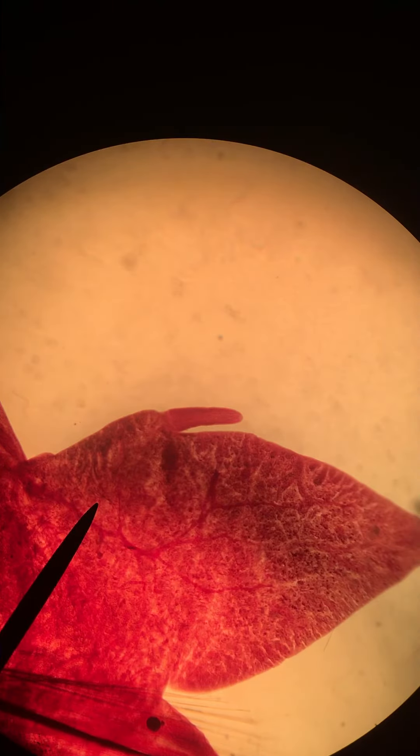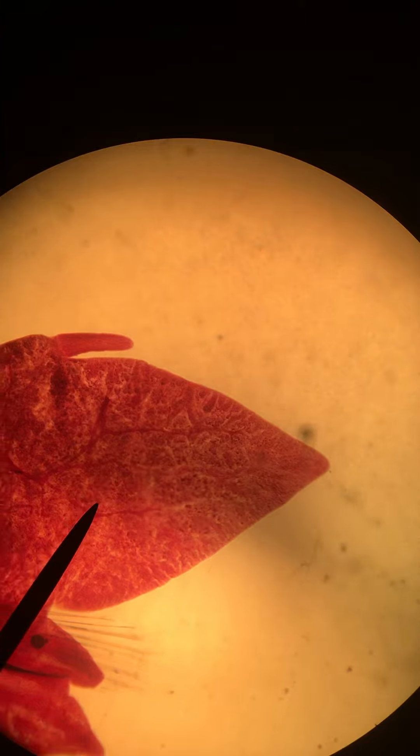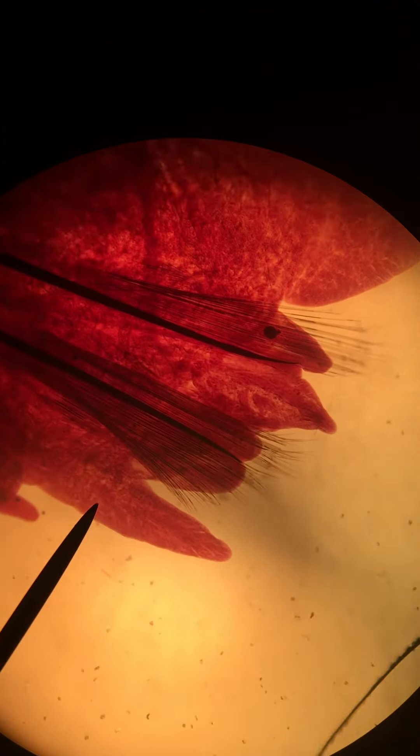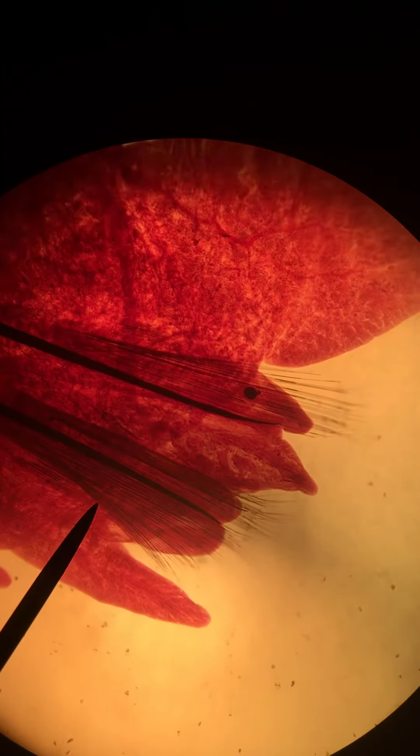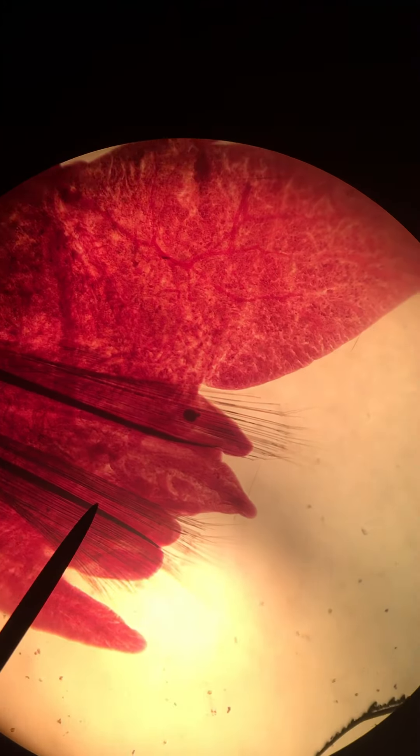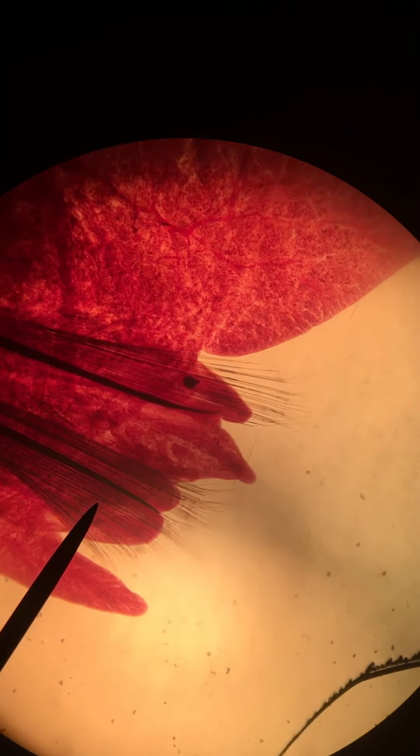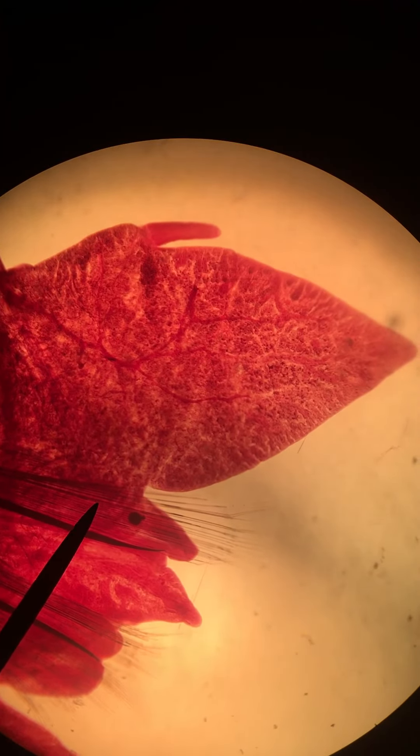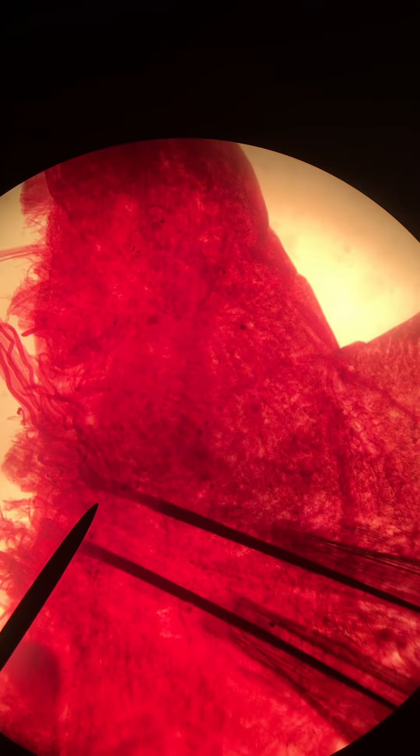We've got the dorsal part, that's the notopodium, the ventral part, that's the neuropodium, the aciculi are the support structures, and then the fibrous structures are called setae. All right, that's it for this one.